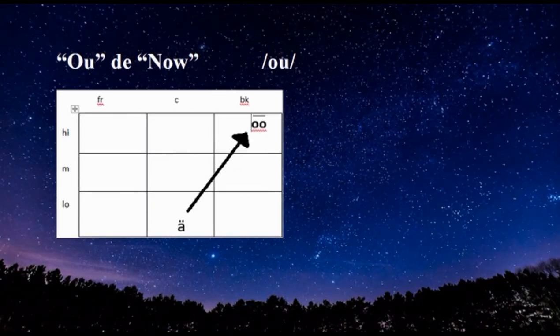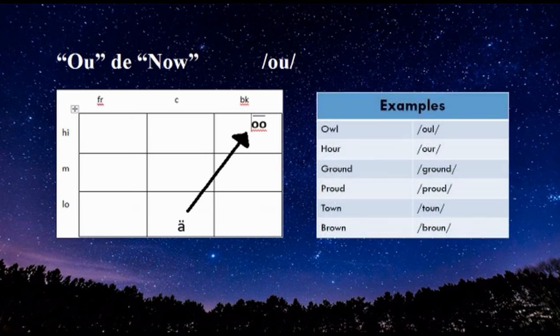And the last one is AU as in 'now'. This last diphthong involves tongue movement from the position of Spanish A — low center — to the position of long U, high back. Examples: owl, brown, proud, town.